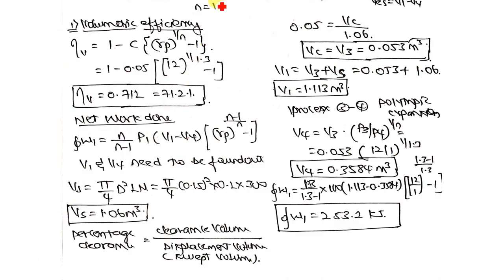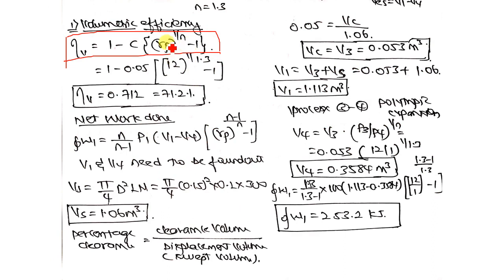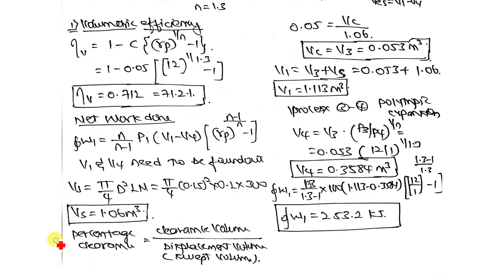For volumetric efficiency, the formula derived in the theoretical part is: volumetric efficiency = 1 − c × (rp^(1/n) − 1), where c is the clearance ratio (5% → 0.05), rp = 12 (pressure ratio), and n = 1.3. Substituting these values gives the volumetric efficiency directly.